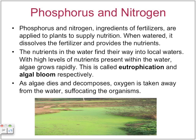Phosphorus and nitrogen are the main ingredients of fertilizers and are applied to plants. When watered, they dissolve and run off into local waters. With high levels of these nutrients in the water, algae grows faster — this is called eutrophication — and the algae growth itself is called an algal bloom. As algae dies and decomposes, oxygen is taken away from the water, which kills off most organisms.